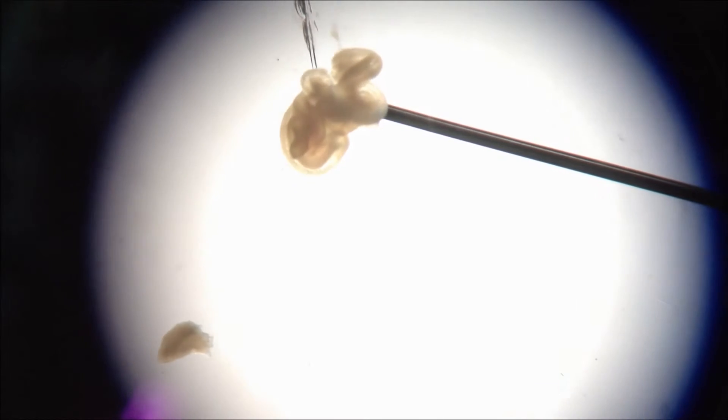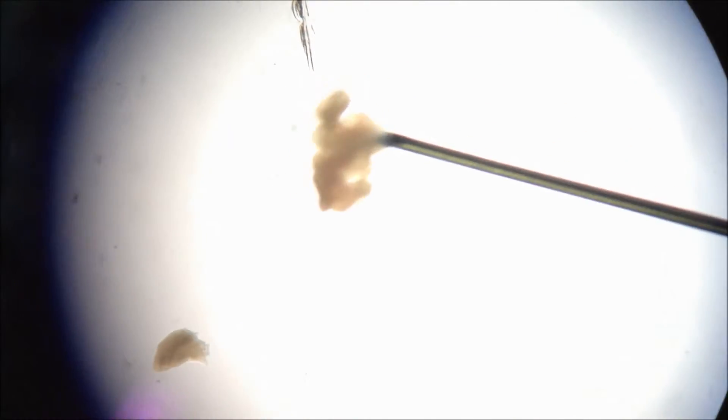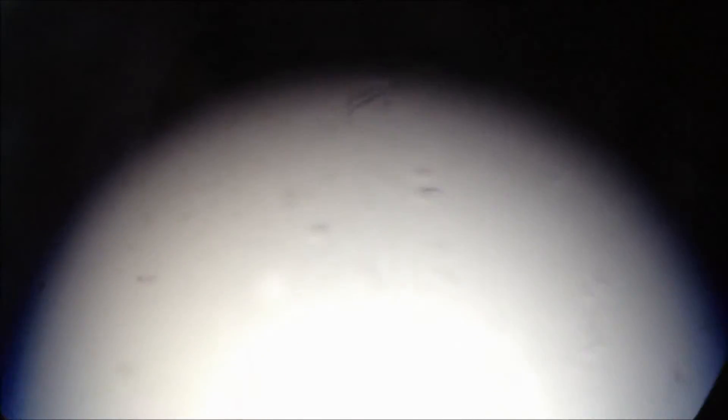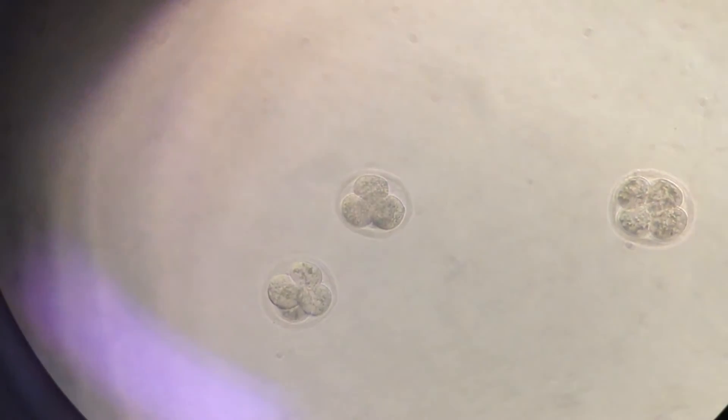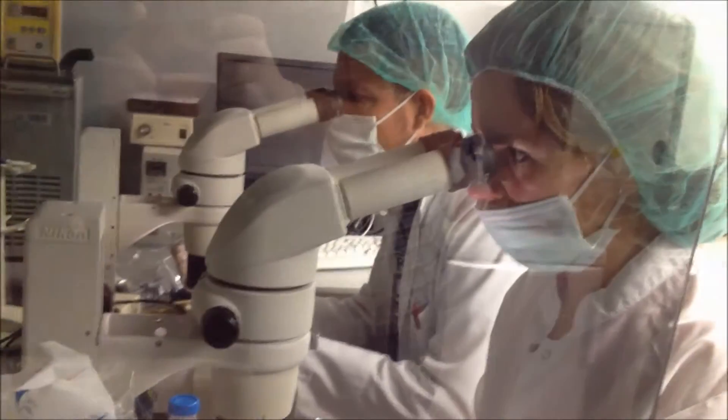The 1.5 day embryos at a 2 to 4 cell stage will be floating in the flush PBS and must be collected. Put the embryos in a culture medium and place in an incubator with 5% carbon dioxide at 37 degrees until Monday.